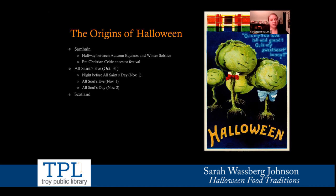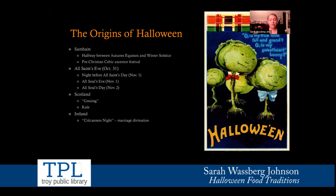A lot of Halloween traditions developed in the Celtic isles — in Scotland and Ireland. Scotland has a tradition called guising, very similar to modern trick-or-treating, and there were interesting traditions involving kale. Ireland also had many Halloween traditions: Halloween was known as Colcannon Night, a divination ceremony involving colcannon — mashed potatoes and cabbage or kale — and also as Snap Apple Night.